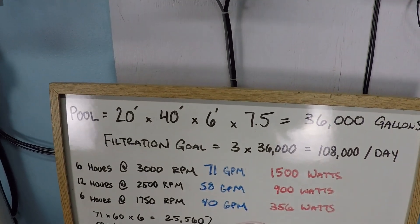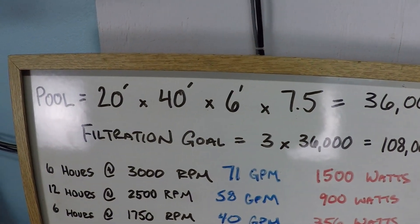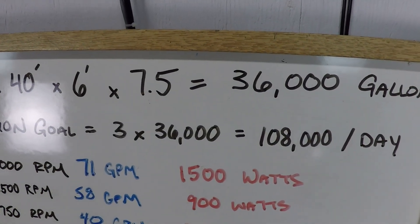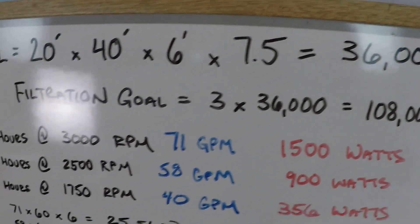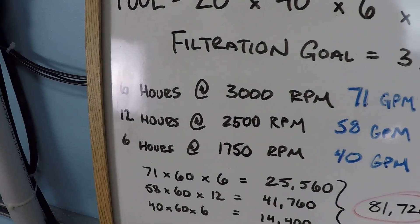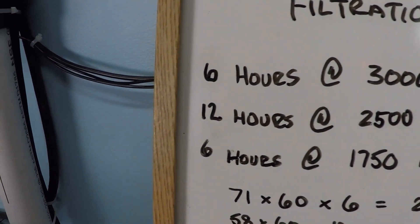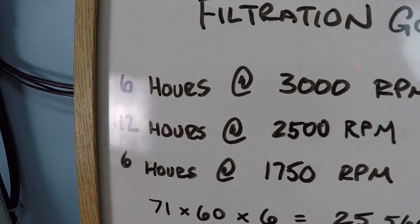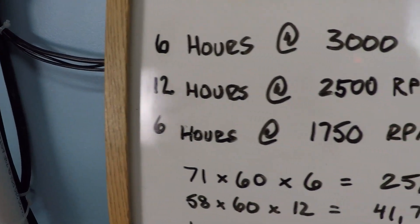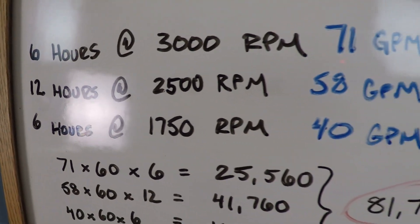But let's go ahead and continue with this calculation. Great big pool, we know we're aiming for 108,000 but we know we're not going to get it. So let's just see what we can get. So we're going to do six hours at the highest possible speed, 12 hours at 2500 rpm, and six hours at 1750 rpm.